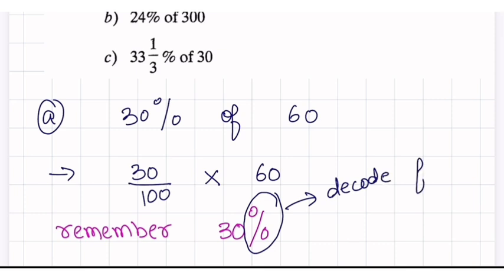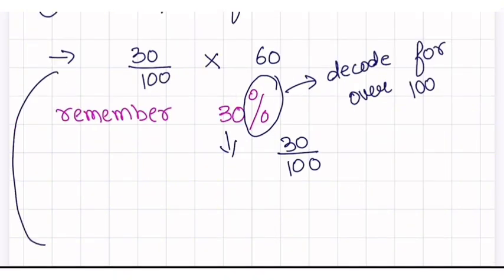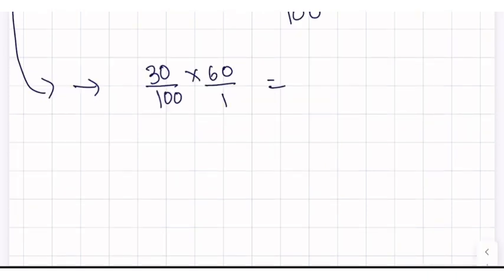Like the number percentage, percentage is going to make 100 go on the bottom. It's a decode for over 100. And 30 over 100 is just 30%. Like if I say 5 over 100, that's 5%. So now we're going to continue to solve problems first.